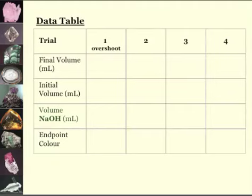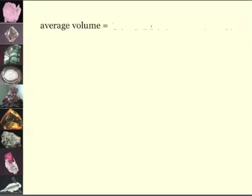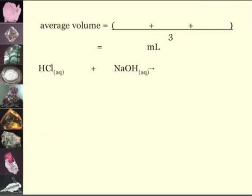You'll set up a data table like this. You'll figure out the average volume, which is where you're going to add all those together and divide it by three. It's going to give you a specific amount. You're going to use that amount to figure out the amount of NaOH that you used. And this happens to be in a nice one-to-one-to-one ratio.